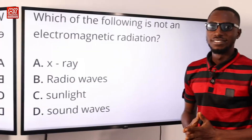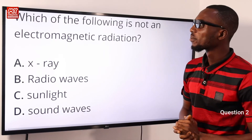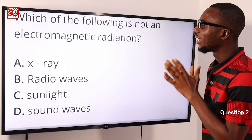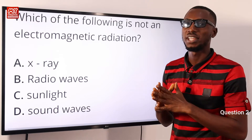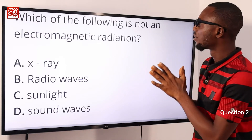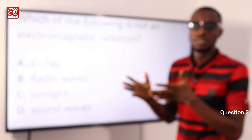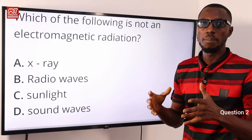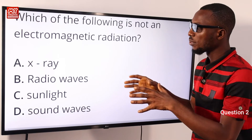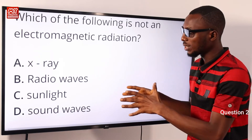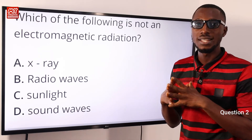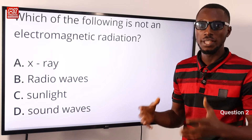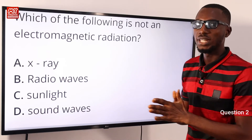Question 2: which of the following is not an electromagnetic radiation? Recall that electromagnetic waves or radiation don't require a material medium for their propagation. The odd one out is option D — sound waves. Sound waves cannot travel in a vacuum, so the correct option is option D.